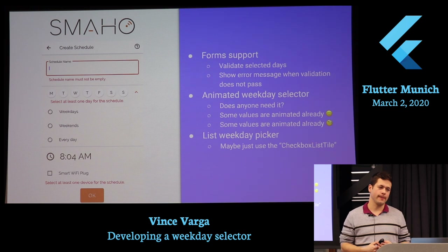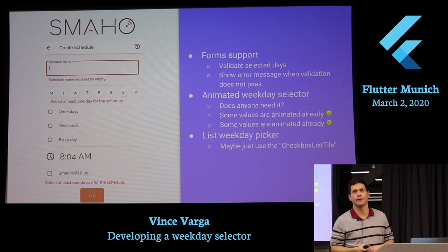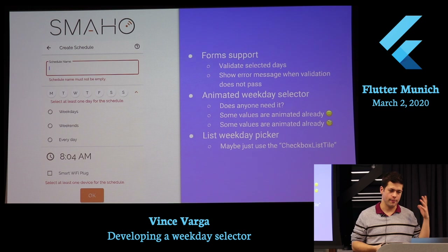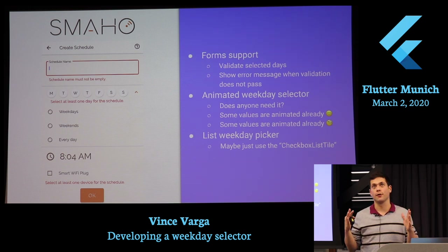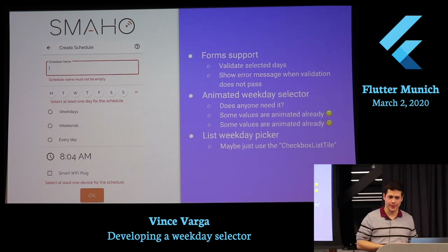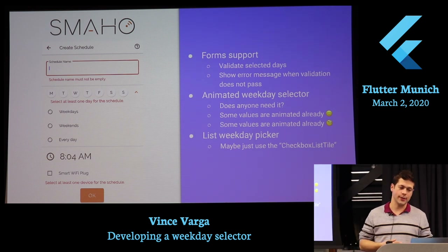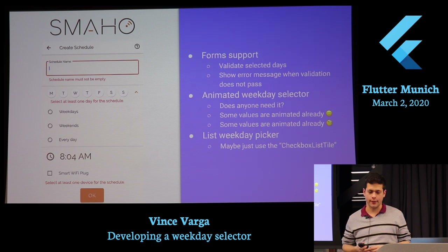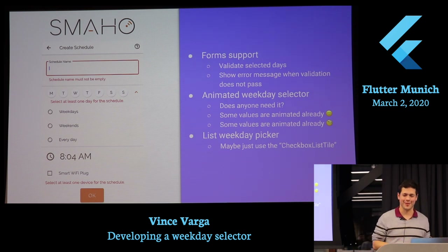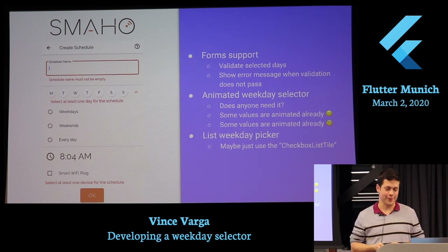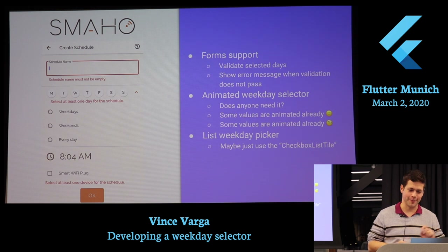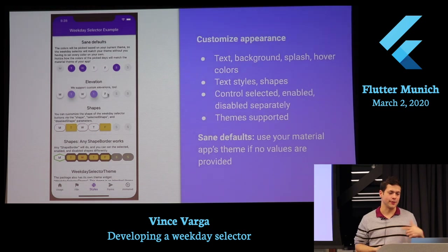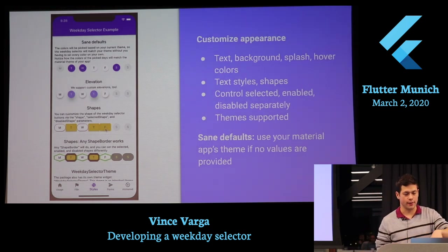I also want to add form support, because I think it would be nice to work with. For example, if you make it mandatory to select at least one day, it would be cool to show an error message that looks the same as text form fields. Maybe make it animated too. Some things are already animated — the shape changes are animated — but the background colors are not. Sorry about that.